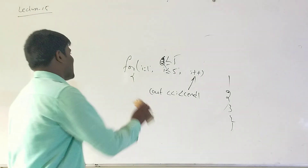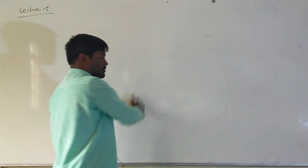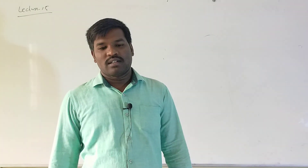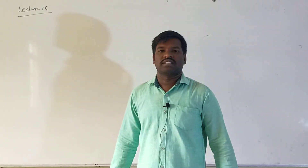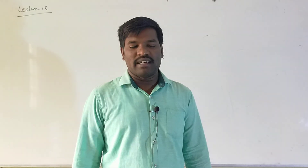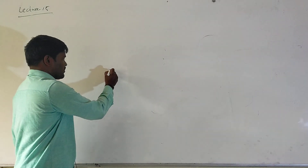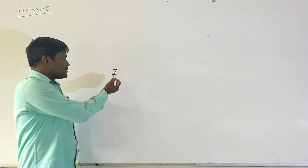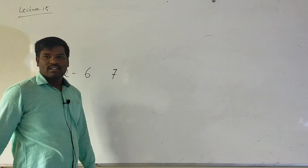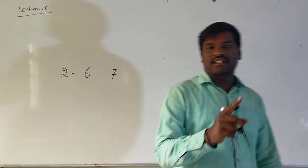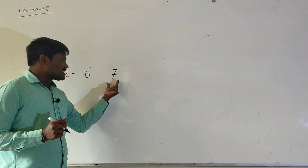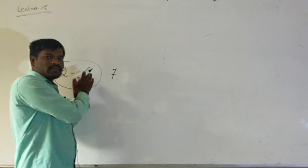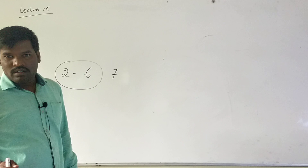Now let's look at an example program to check whether a given number is prime or not. A prime number is a number which is divisible only by 1 and itself. For example, consider 7 as a prime number. To confirm 7 is prime, we check the numbers from 2 to 6 — none of those should divide 7 completely. Note that 1 is neither composite nor prime; the first prime number is 2.